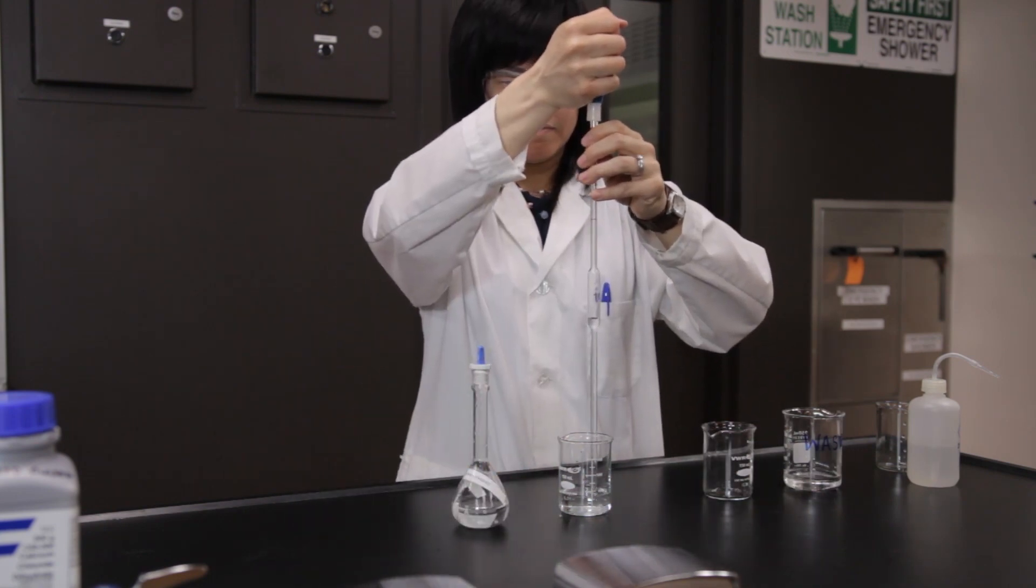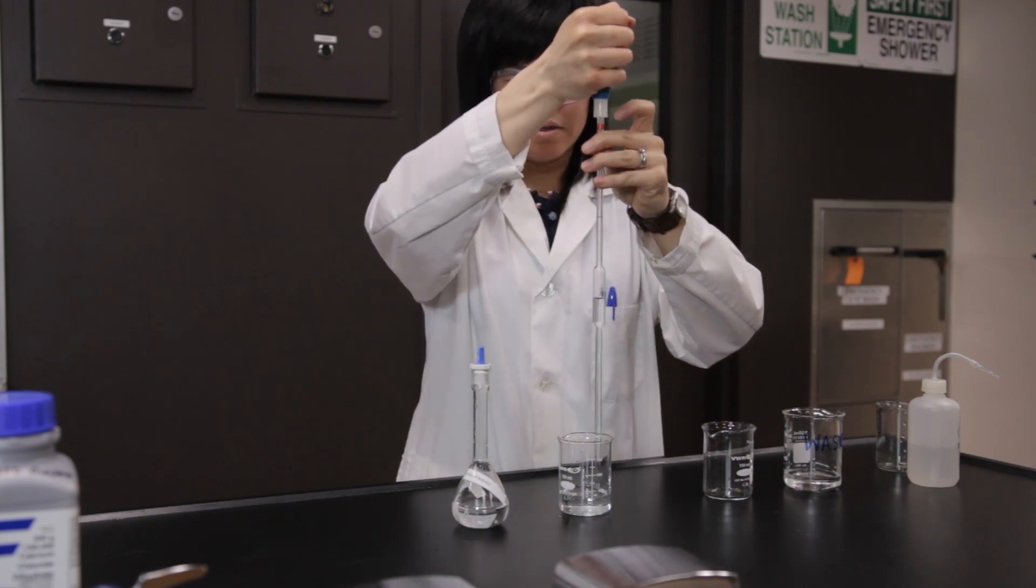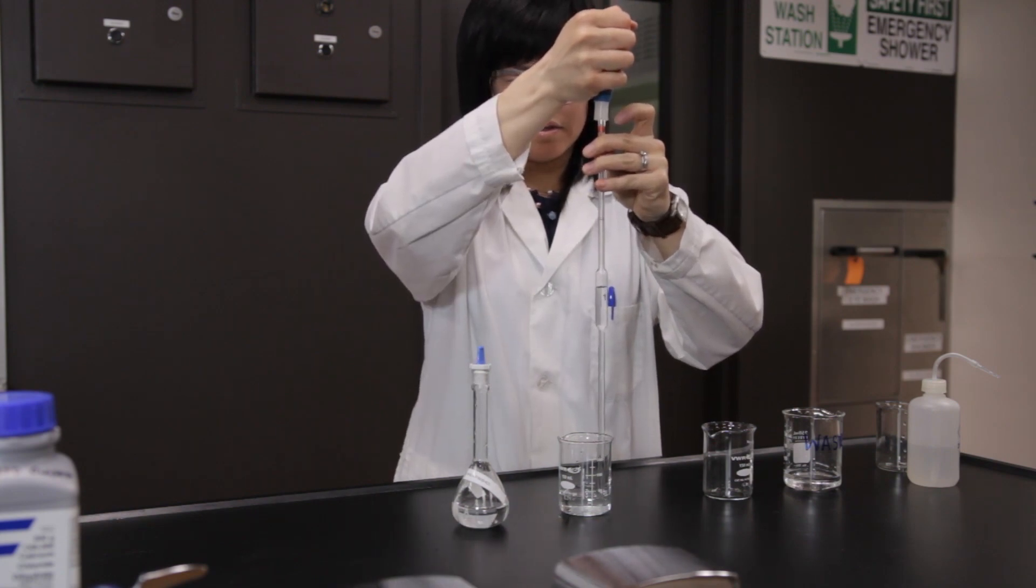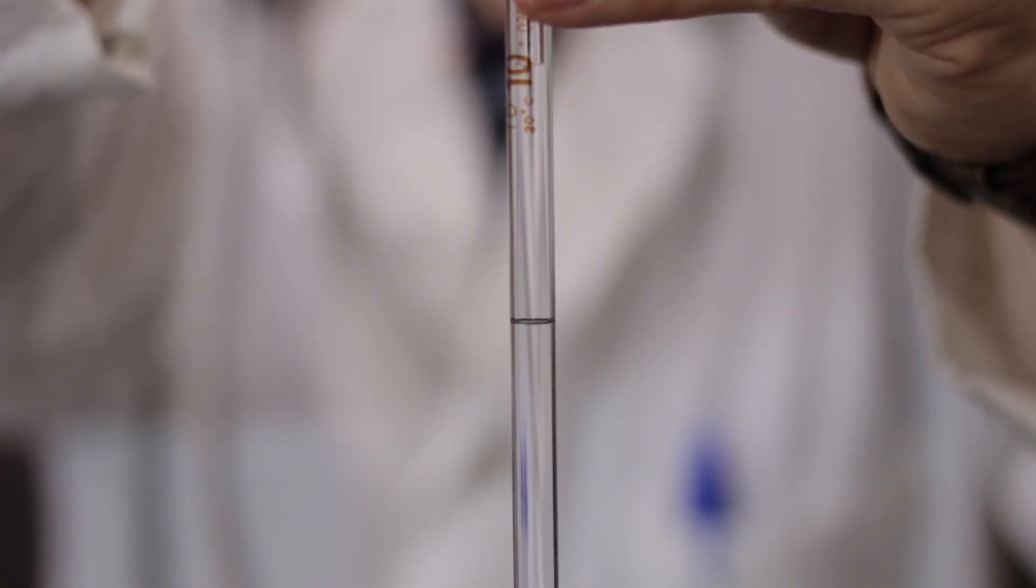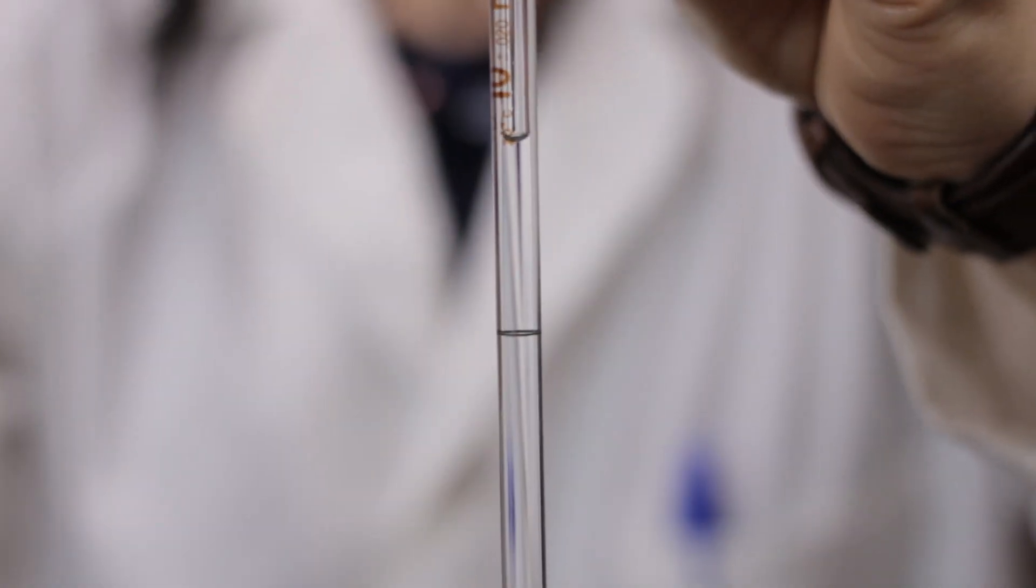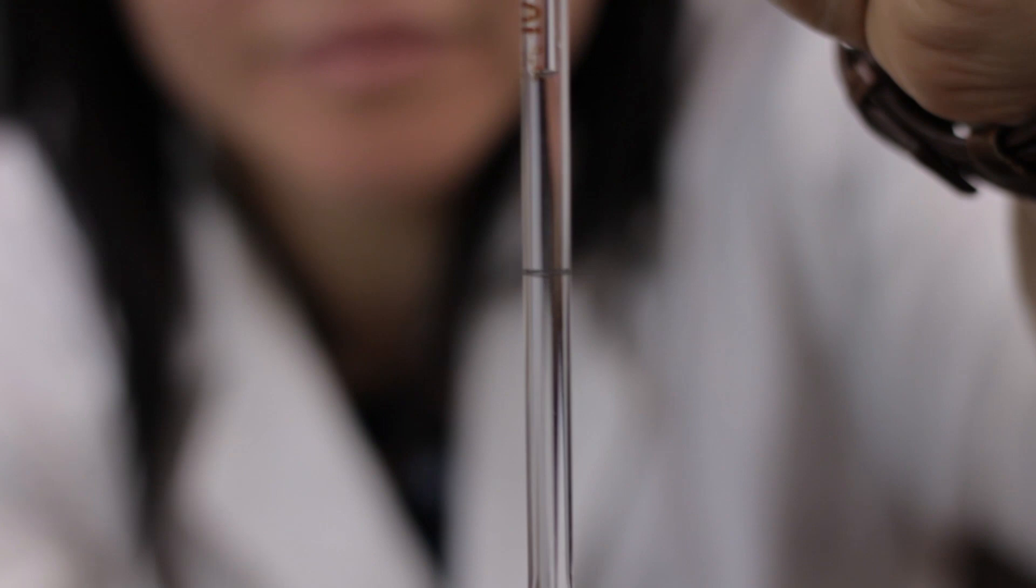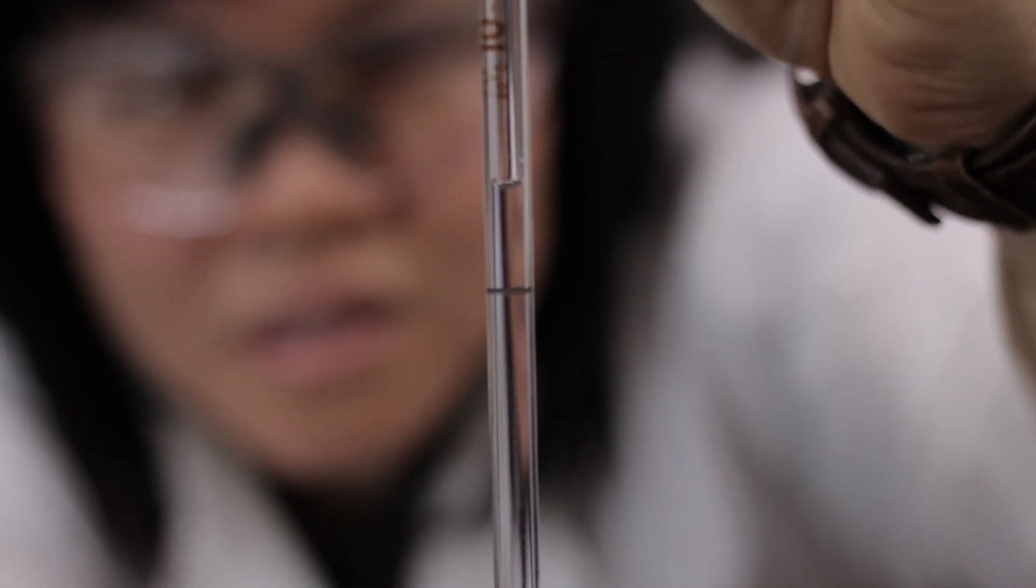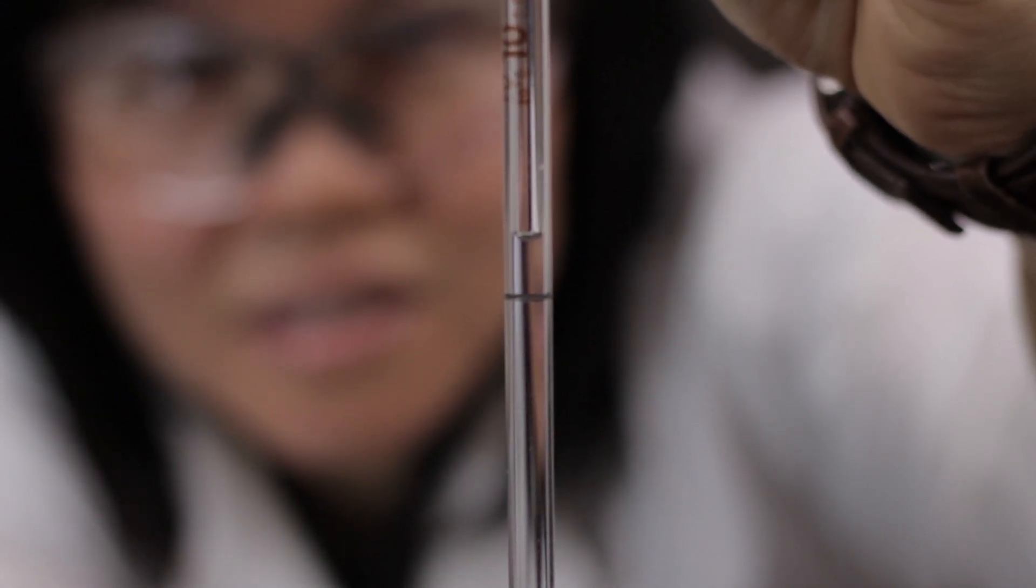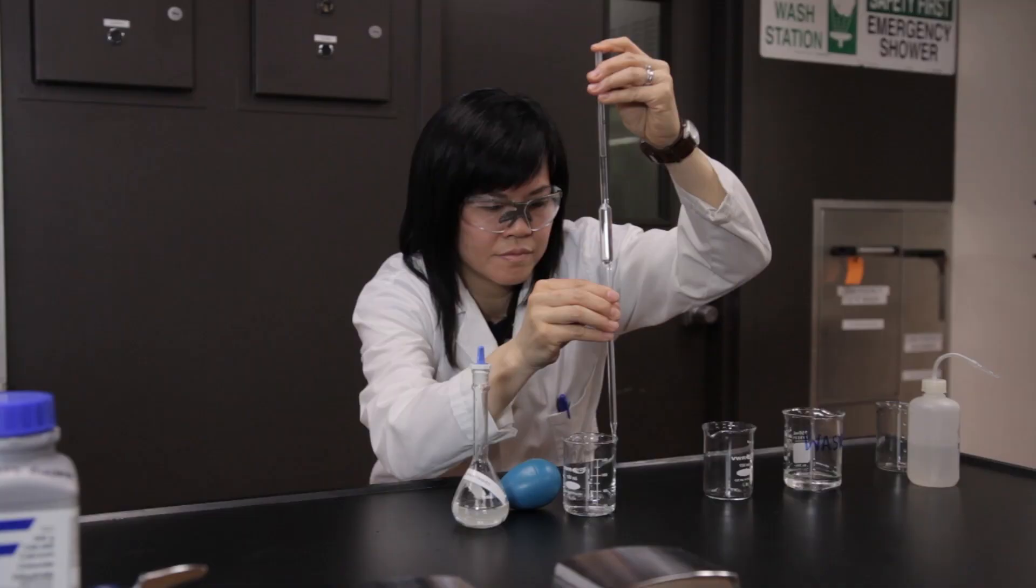Insert the pipette tip into the solution and draw in the solution until the liquid level is a couple of inches above the mark. Remove the bulb and quickly place your forefinger over the end of the pipette. Release the finger pressure slowly to allow the solution to drain until the bottom of the meniscus is at eye level. Touch the tip of the pipette to the beaker to remove any partially formed drops.